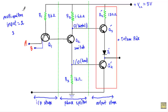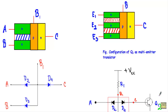Transistor Q1 is a multi-emitter transistor. With this kind of circuit structure, the circuit analysis will be very complicated. Therefore, I will replace transistor Q1 with its diode equivalent circuit.